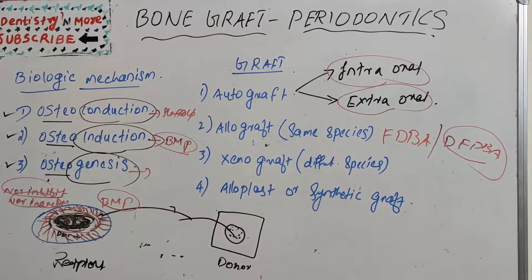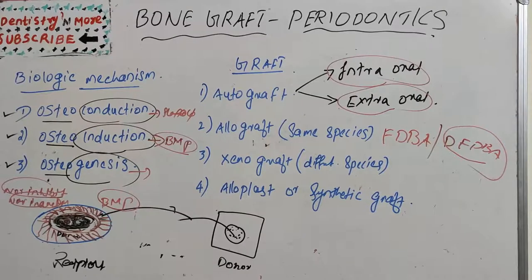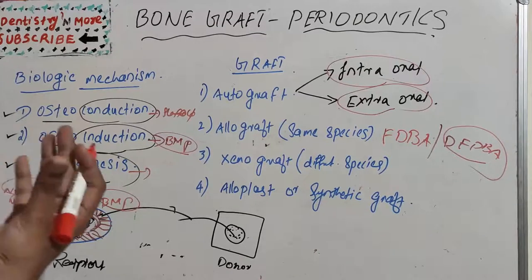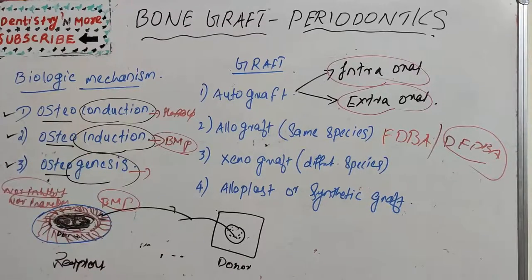The third type is xenograft, taken from a different species — such as calf bone, keel bone, and inorganic bone. These materials have largely been discarded for various reasons.